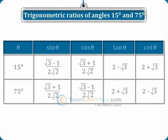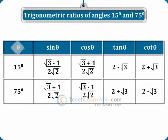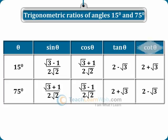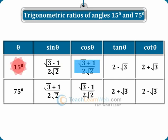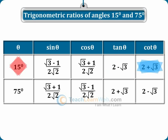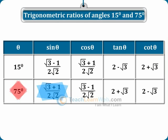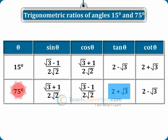Trigonometric ratios of angles 15° and 75°. The table shows columns for theta, sinθ, cosθ, tanθ, and cotθ. When theta is 15°: sinθ = (√3−1)/(2√2), cosθ = (√3+1)/(2√2), tanθ = 2−√3, cotθ = 2+√3. When theta is 75°: sinθ = (√3+1)/(2√2), cosθ = (√3−1)/(2√2), tanθ = 2+√3, cotθ = 2−√3.